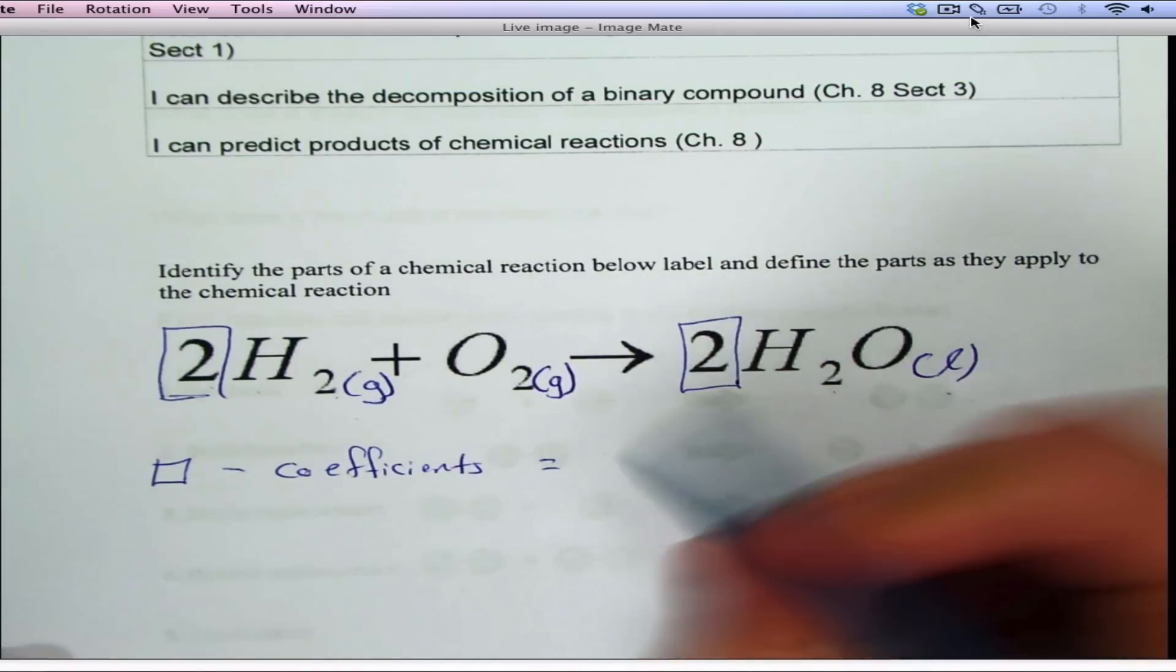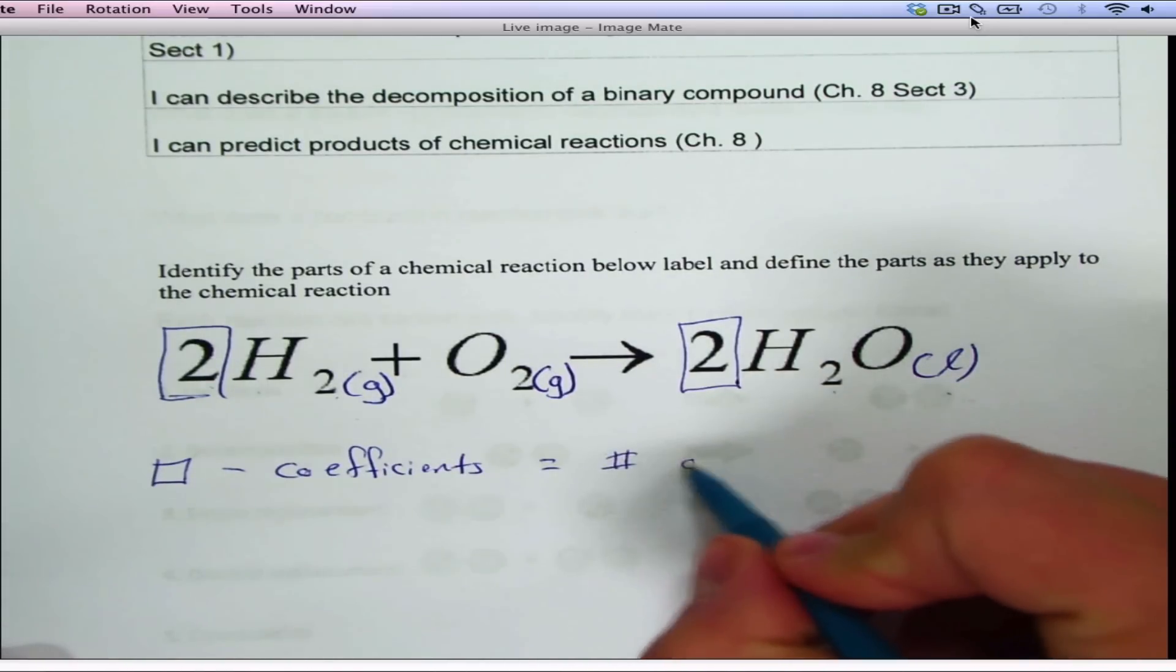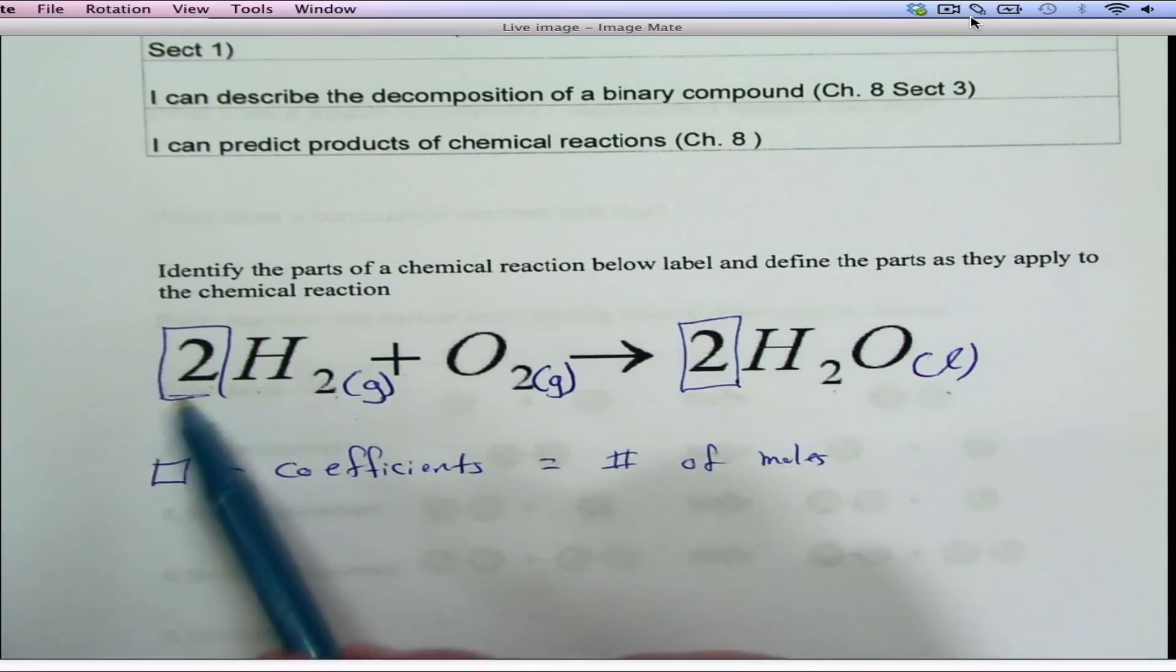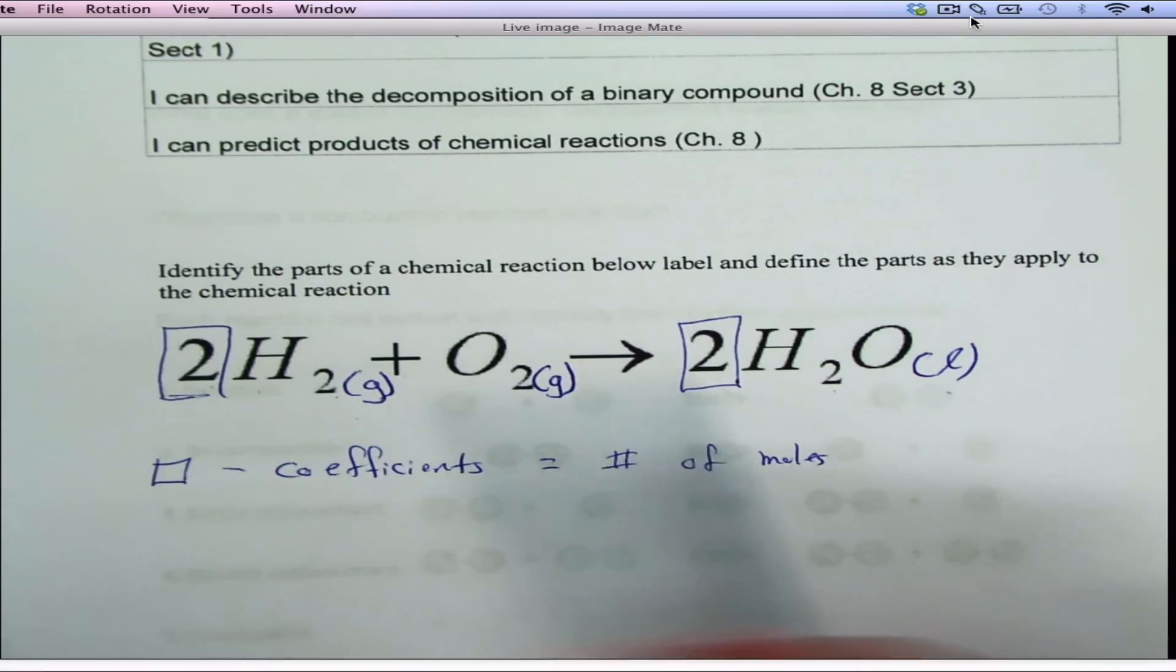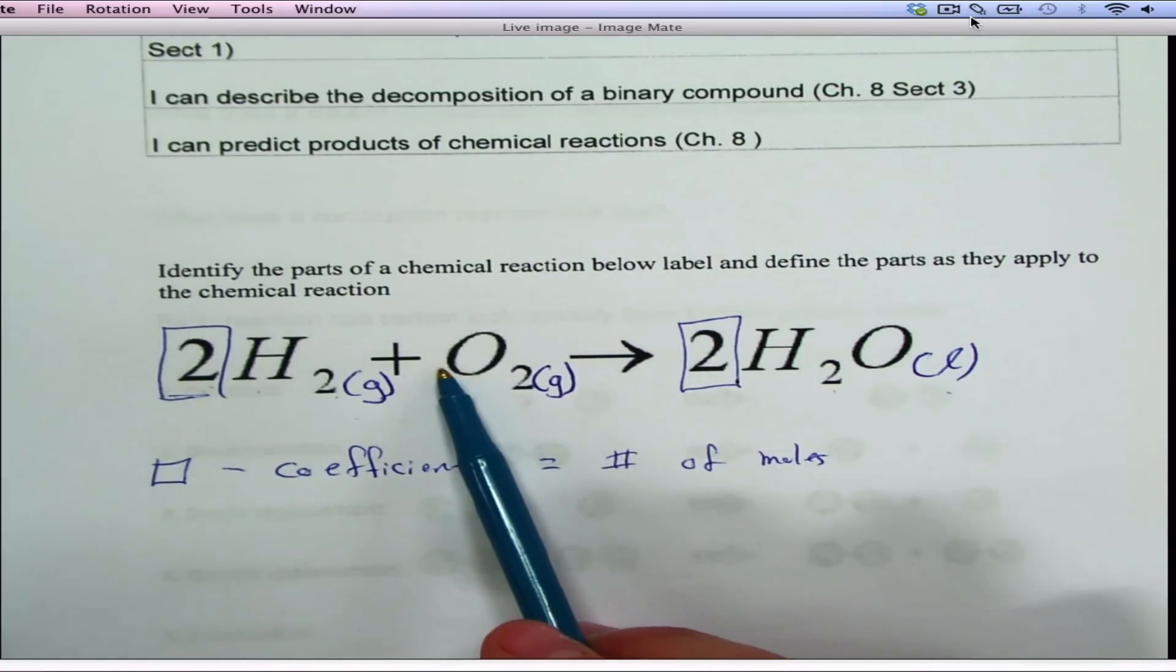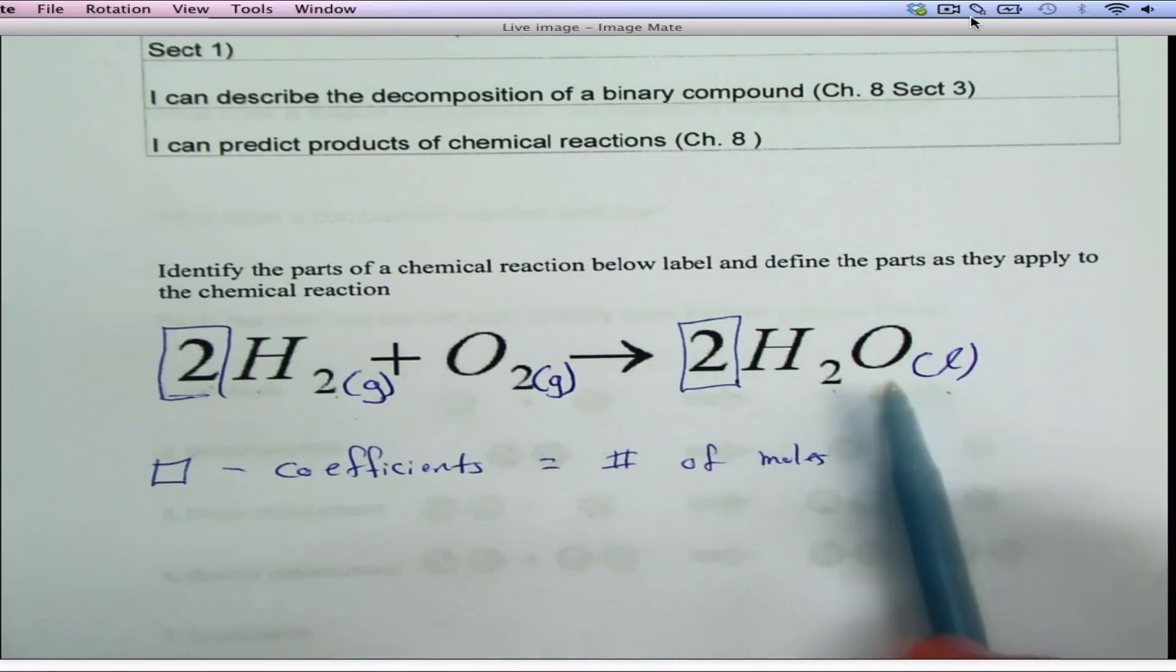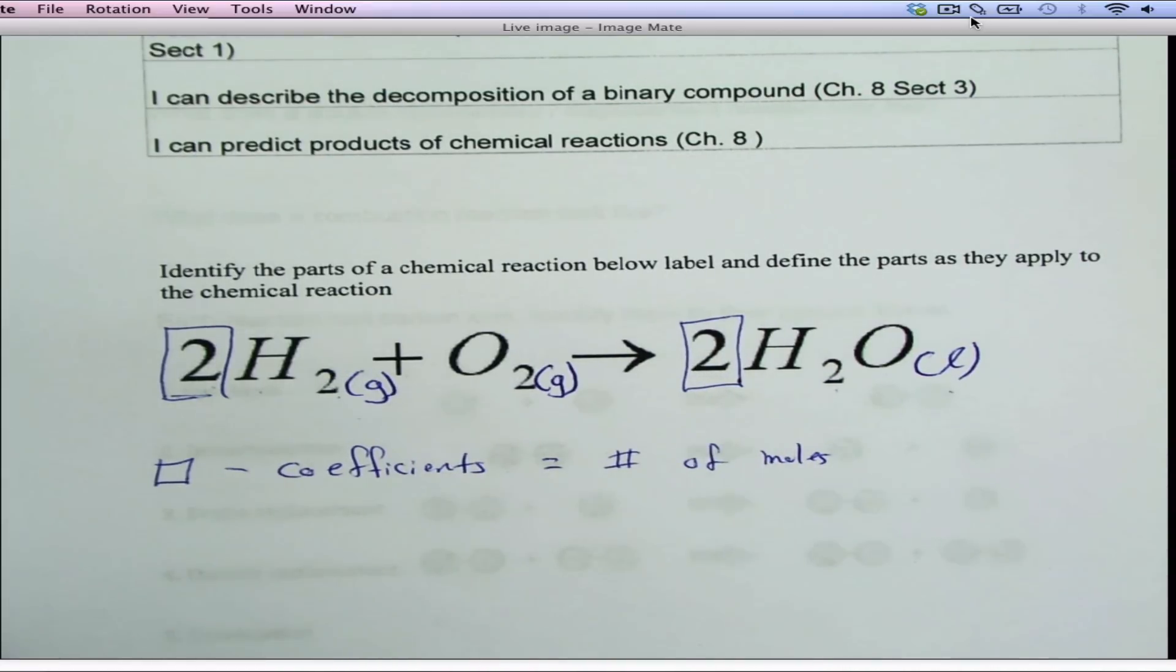Coefficients tell you the number of moles of whatever you're using. For example, we have two moles of H2, one mole (because the ones are not written but they're understood) of O2, and two moles of H2O. That tells you how many moles of a compound or element you have.